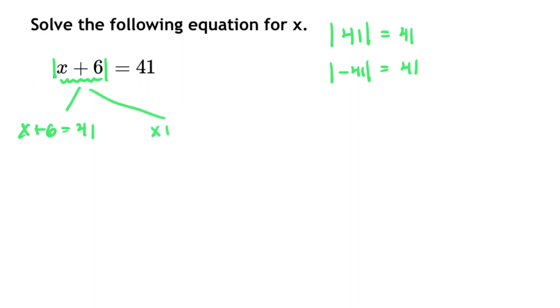then that stuff inside, that x plus 6, could equal a negative 41. And from there, then we just go ahead and solve each of those equations, and that's how you end up with two answers.